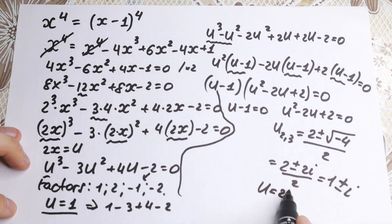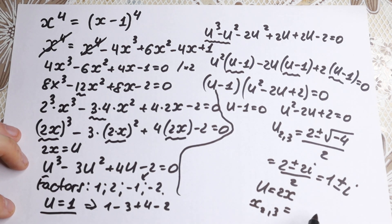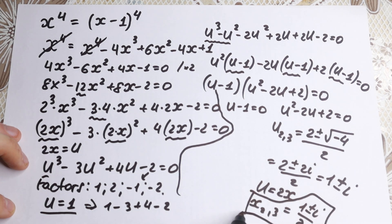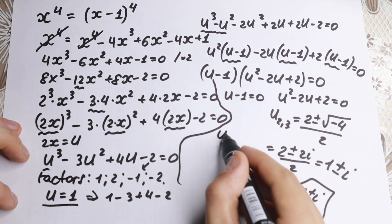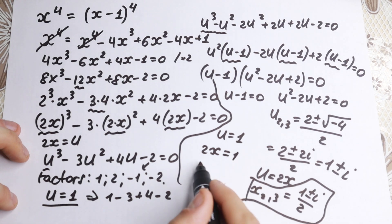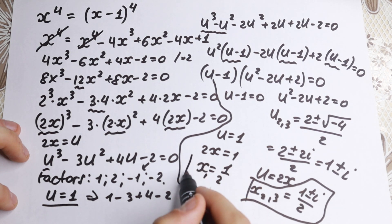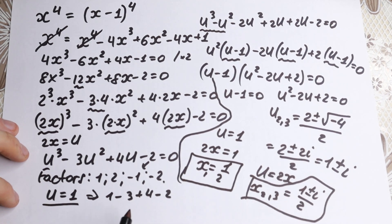Recall that u equals 2x, so to find x we divide by 2. The complex roots give x equals 1 plus or minus i, over 2. For the real root: u equals 1, so 2x equals 1, giving x equals one half. Our full solution is x equals one half and x equals 1 plus or minus i over 2.